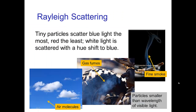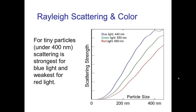Scattering by very tiny particles such as gas fumes, fine smoke from a cigarette, or even air molecules — that scattering by tiny particles is strongest for the blue side of the spectrum and weaker for the red side. So we tend to see this type of scattering as bluish. Here's a graph of scattering intensity against particle size. A fine smoke particle of 20 nanometers scatters some red light, more green light, but the strongest scattering is for blue light, and so we see this as bluish.